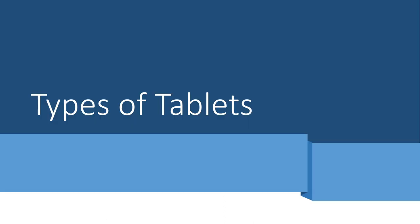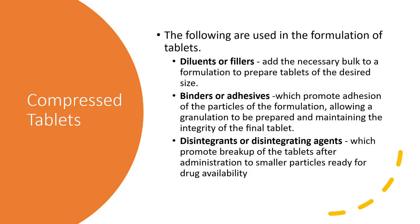We have different types of tablets based on their methods and their uses. But before we move on to the various types of tablet, let us first discuss the most basic, our compressed tablets. Compressed tablets are tablets that are made via compression.